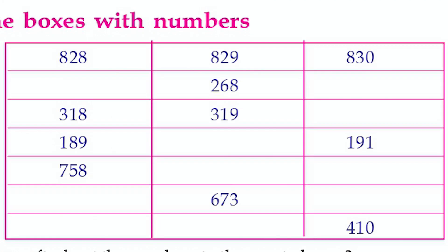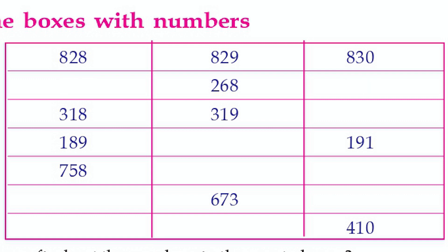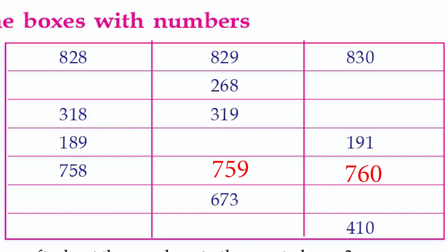Number sequences: 828, 829, 830. The middle number is 268, so the sequence is 267, 268, 269. Next: 318, 319, 320. Then: 189, 190, 191. Then: 758, 759, 760. The middle number is 673: sequence is 672, 673, 674. The middle number is 409: sequence is 408, 409, 410.